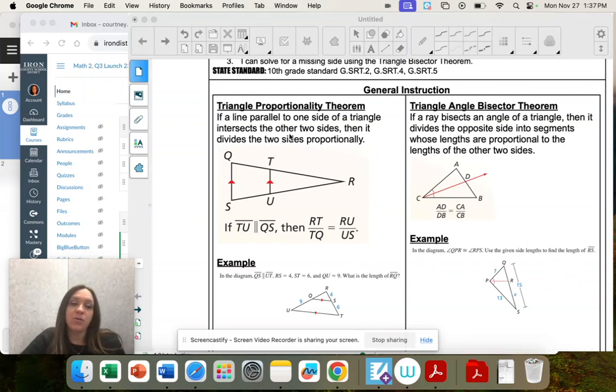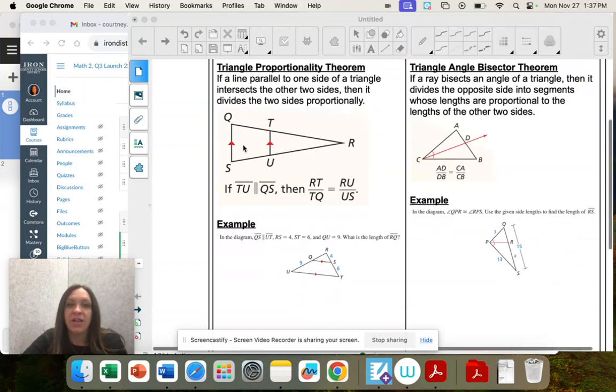I'm just going to go over the theorems. We have the triangle proportionality theorem. If a line parallel to another line intersects a triangle, then it divides the two sides proportionally.